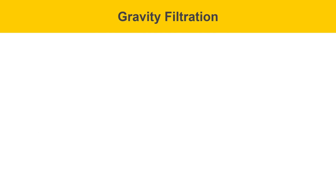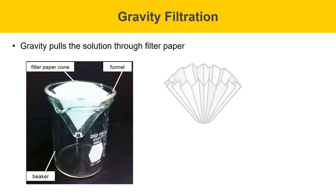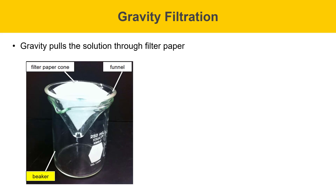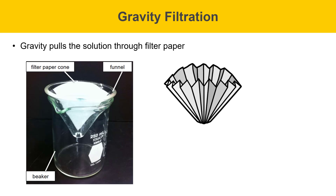Gravity filtration is described on this slide. It is simply a method that uses gravity to pull the solution through filter paper. It's a very simple setup: there's a beaker or container to catch the solution, a funnel, and some filter paper folded into a cone. Solution is poured through this filter, drains through by gravity, and collects in the beaker. One thing you can do to increase efficiency is to put folds in your filter paper — this is called fluted filter paper. It's a cone folded many more times, and every additional fold increases the surface area and the efficiency of the filter paper.